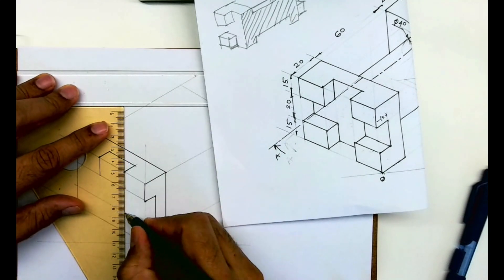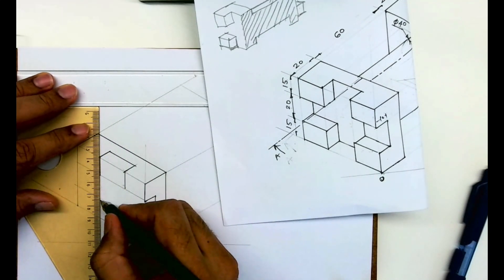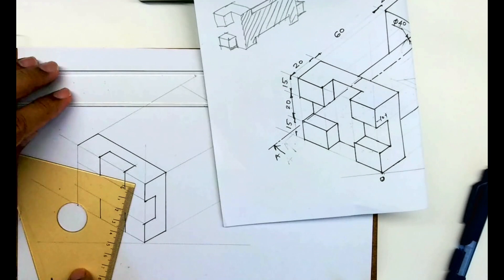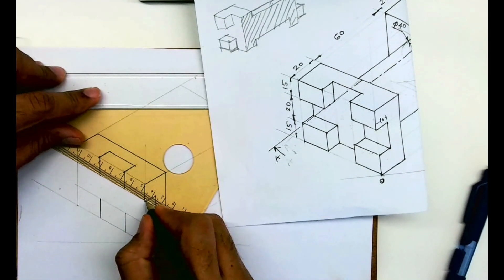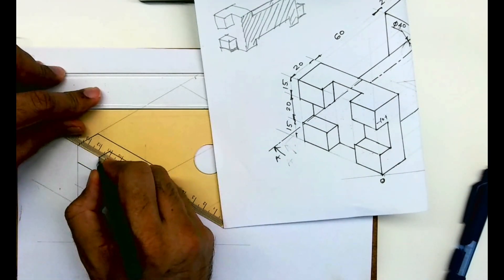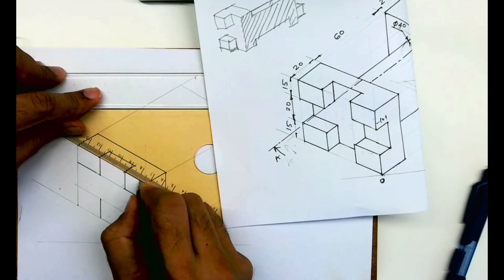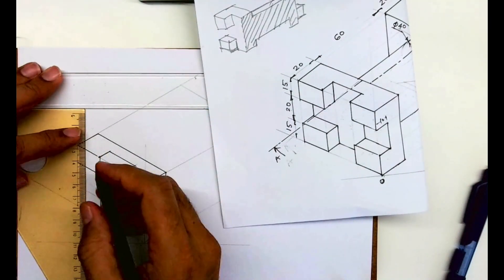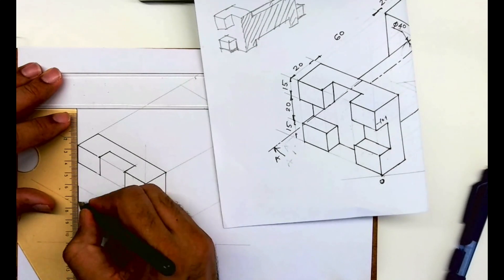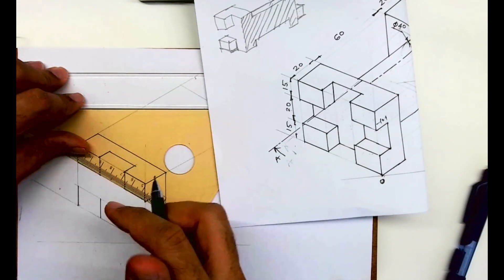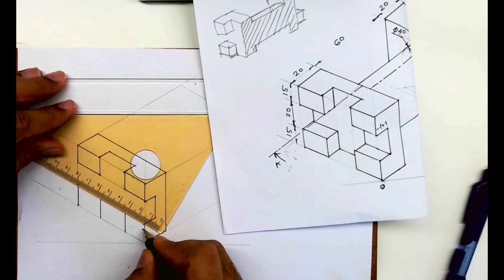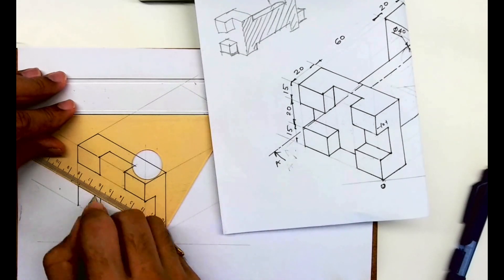Then you draw vertical line like this. We'll draw up and down both. And we'll join all these lines so we'll get this rectangle.